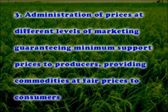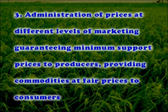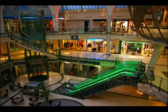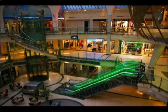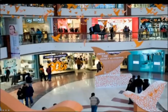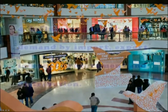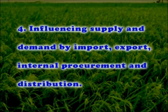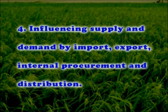Other forms of government intervention include administration of prices at different levels of marketing, guaranteeing minimum support price to producers, providing commodities at fair prices to consumers, and fixing the rates of commissions charged by commission agents. The government also influences supply and demand through import, export, internal procurement, and distribution.